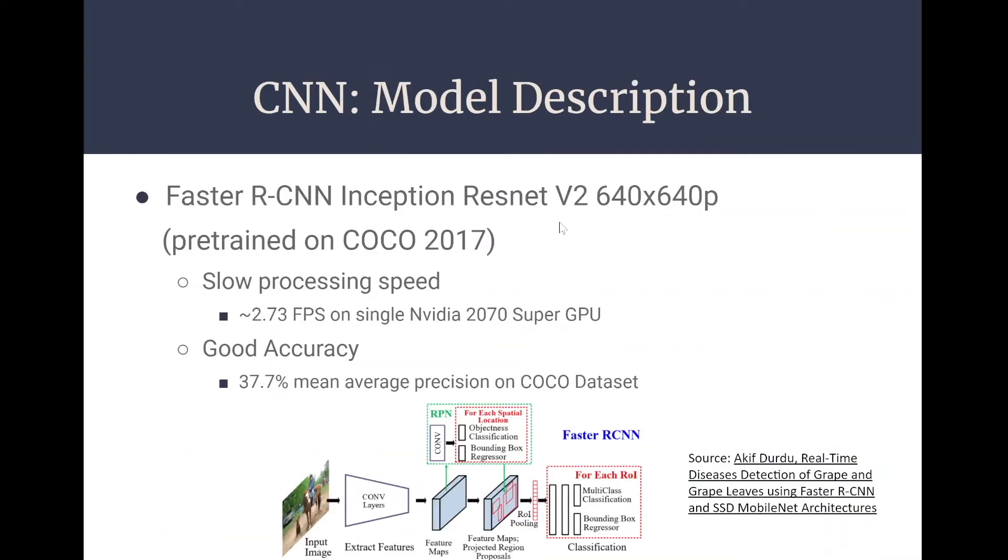The specific model used was the TensorFlow implementation of Faster R-CNN Inception ResNet V2 640x640 pixel images. This model came pre-trained on COCO 2017, which is quite normal for this type of method because it improves the results for a detection model. So how does Faster R-CNN compare to other types of object detection methods? As we can see over here, it has a slow processing speed but it has good accuracy when compared to other detection methods.